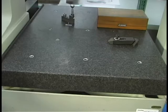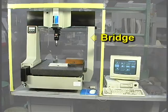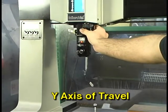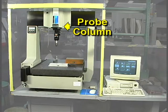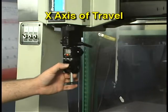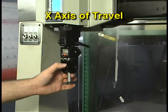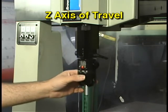Most shop CMMs include a surface plate for mounting workpieces to be measured. Over the surface plate is the bridge. The bridge can move back and forth as the Y axis of travel. Mounted on the bridge is the probe column. Movements of the probe column back and forth across the bridge are movements in the X axis. Movements of the probe column up and down are movements in the Z axis.